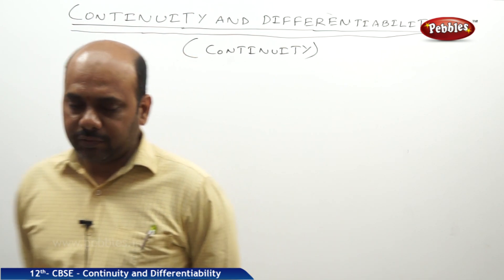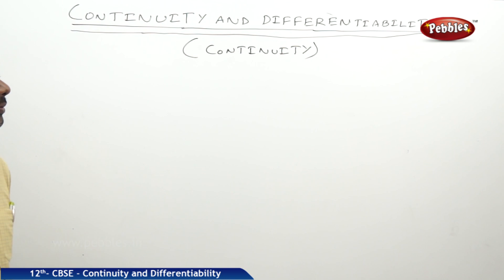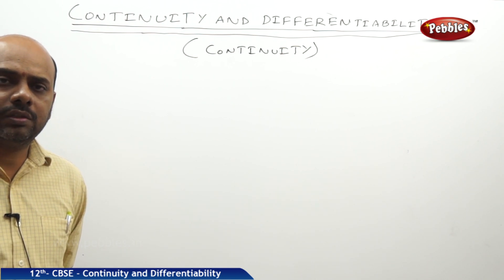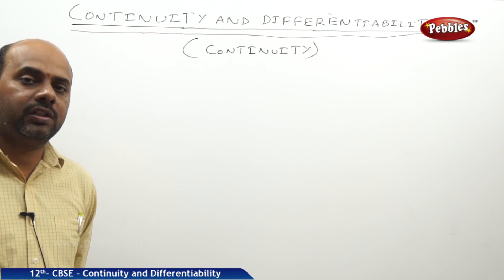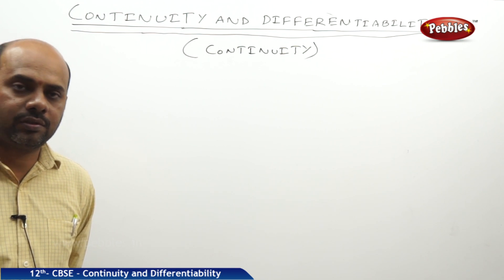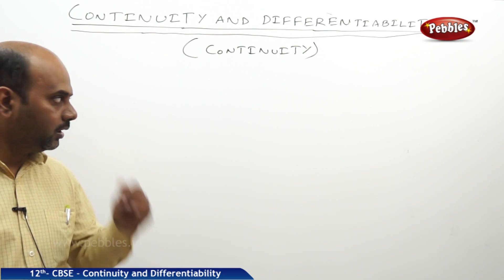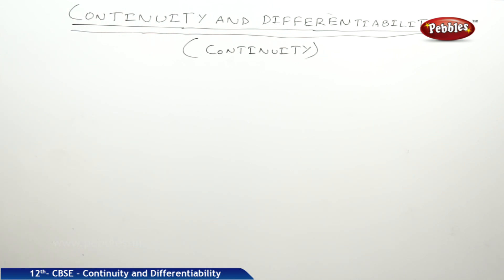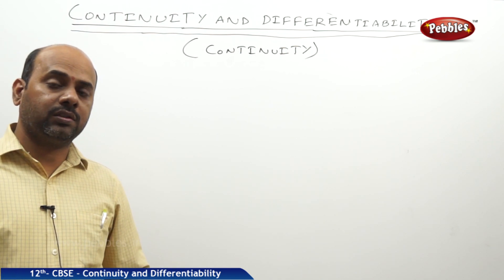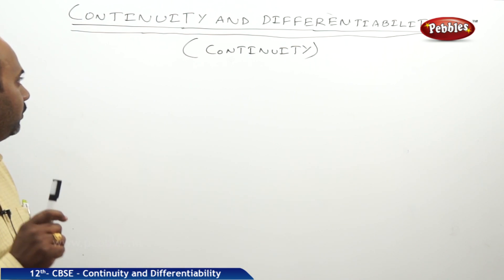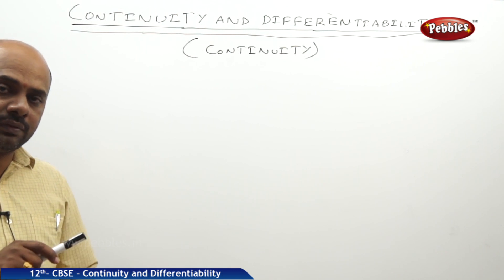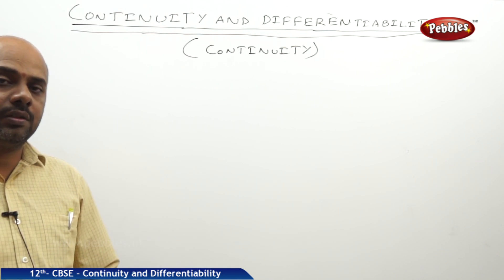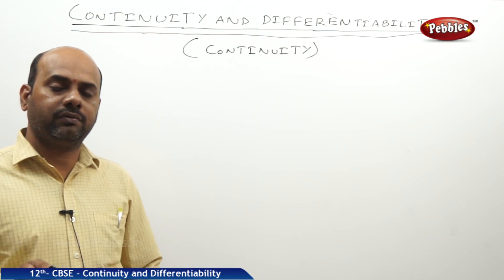If you could observe carefully, a function is said to have a limit L provided both the left-hand limit and right-hand limit should be equal. Now, when coming to continuity, there we had not defined about the value, but here we will be defining about the limit of a function, and if the limit exists, it should be equal to the value of the function.